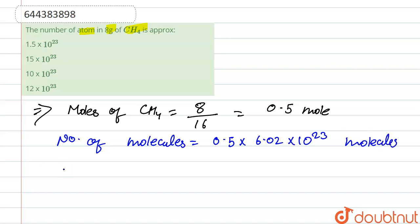We know that in one molecule of CH4 is equal to 5 atoms. So we calculate the number of atoms.